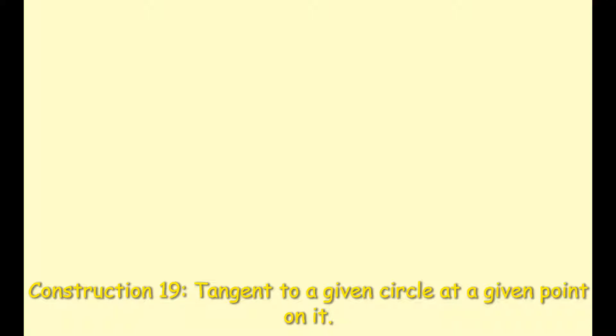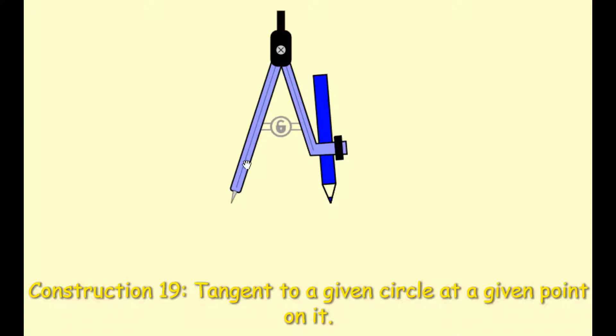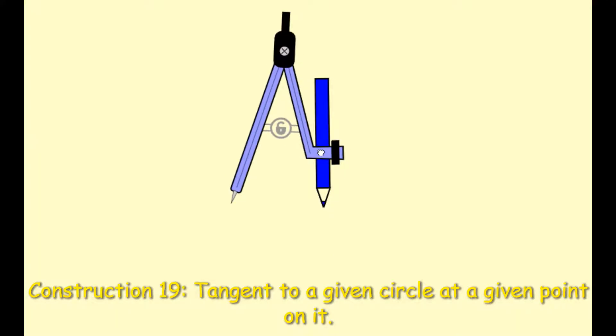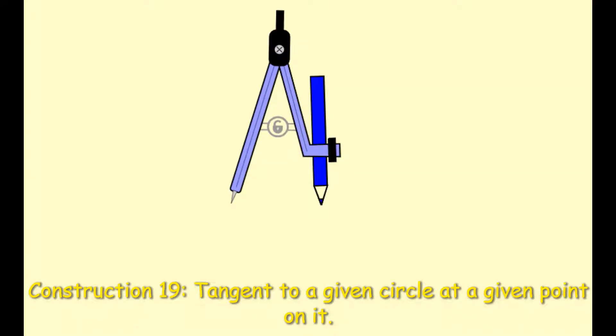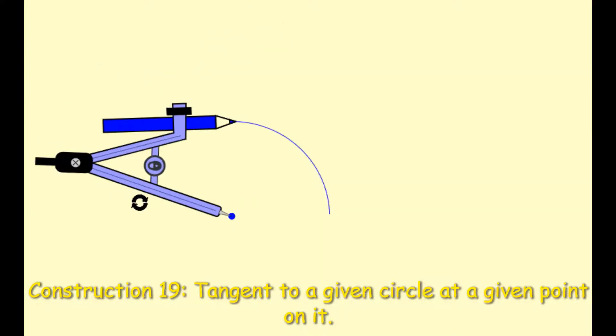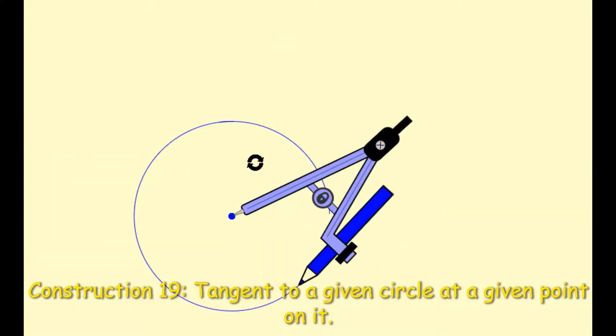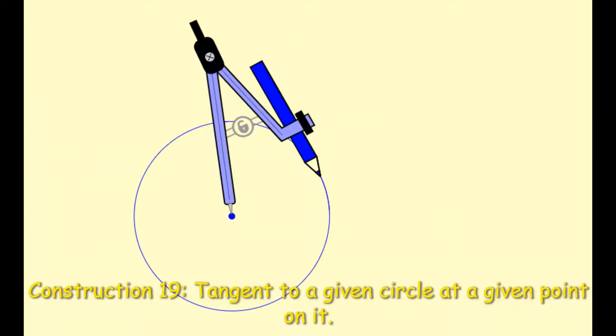Firstly, we're going to use the method using a ruler and a set square. First of all though, we're going to draw that circle that's given in the construction title. So with your compass, draw a circle on your page. Now it doesn't matter what the size of your circle is, so don't go too large. And we're going to draw our circle, always holding it from the top of the compass. And I'm going to put away my compass.